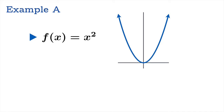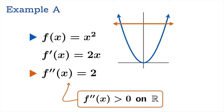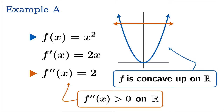Let's look at an example. If f(x) = x², then f′(x) = 2x and f″(x) = 2, a positive constant. So f″(x) > 0 on the whole real axis, and therefore f is concave up on all of ℝ — which we already intuited from the parabola opening upward.